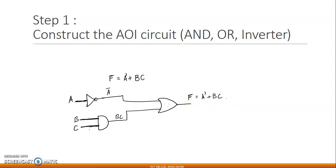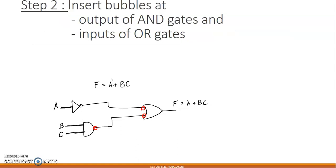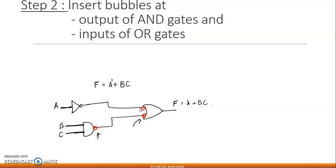Once you have constructed the AOI circuit, the next step involves looking at all the AND gates and OR gates. Wherever you see an AND gate, you insert a bubble at the output. Wherever you see an OR gate, you insert bubbles at the inputs — one bubble per input. That's all we do in the second step: insert bubbles at the output of AND gates and at the inputs of OR gates.